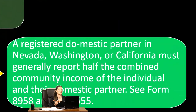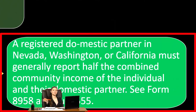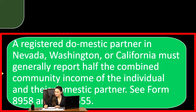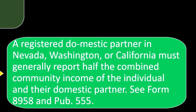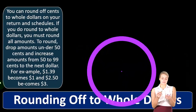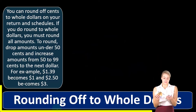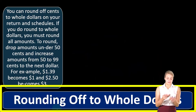A registered domestic partner in Nevada, Washington, or California must generally report half the combined community income of the individual and their domestic partner. You can see Form 8958 and Publication 555 for more information.